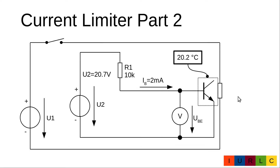Here is our measurement setup. We combine a transistor with a heating resistor and fix a thermocouple on the transistor to measure the temperature. We supply the base-emitter diode with a constant current of about 2 mA, achieved with a relatively high voltage of 20.7 V through a 10 kΩ resistor. We monitor the base-emitter voltage with a voltmeter, and a second power supply drives the heating resistor, which can be switched on and off.